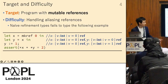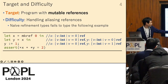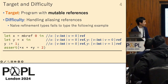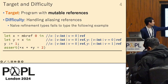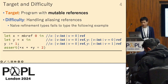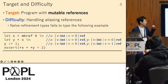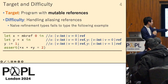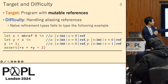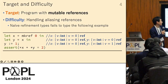The comment on the right side shows a naive refinement type trying to verify this program. At the first line, the variable x is initialized as a reference containing the integer value 0, and the type of x is initialized accordingly. At the second line, y is initialized as an aliasing reference to x, and the type of y is a copy of the type of x.